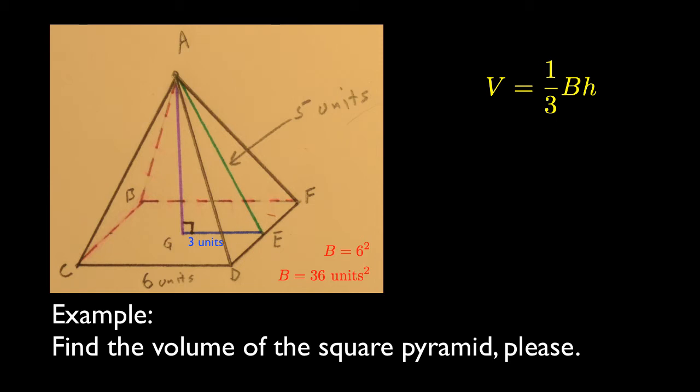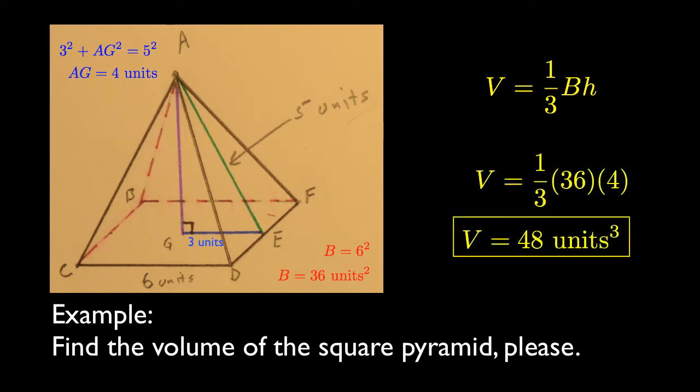We're given ae, the green length is 5 units. So the height can be found using the Pythagorean theorem. Now we have all we need to know. Volume is 1/3 times 36 times 4, which is 48 cubic units.